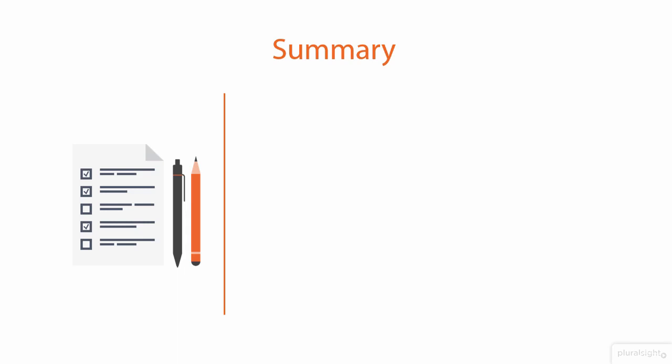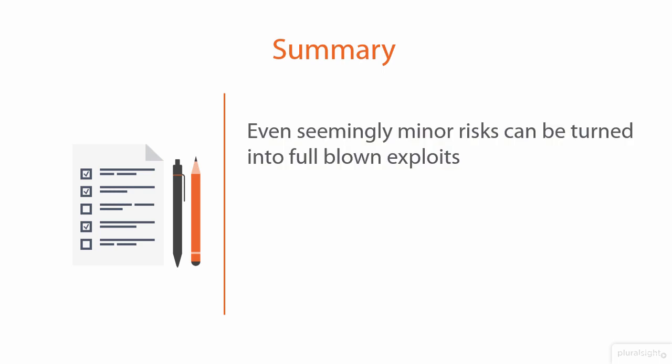Let's summarise the module. One of the first things we covered in 'Other Attacks on the Server' is how seemingly minor risks — such as improper error handling — can actually be turned into full-blown exploits. We saw internal stack trace and version information of ASP.NET when I originally tampered with the URL, exposing the version. That in itself was very minor, but when we combined that with the SQL injection attack, we started getting passwords out of the system.